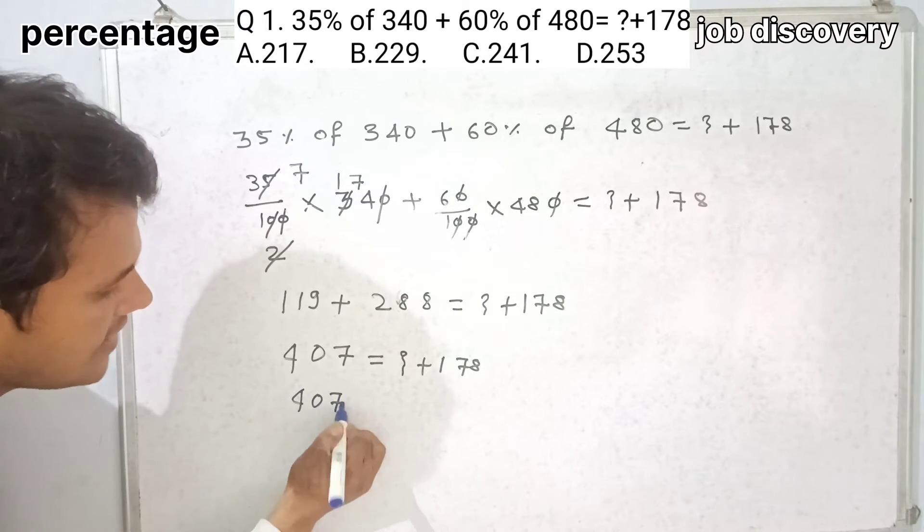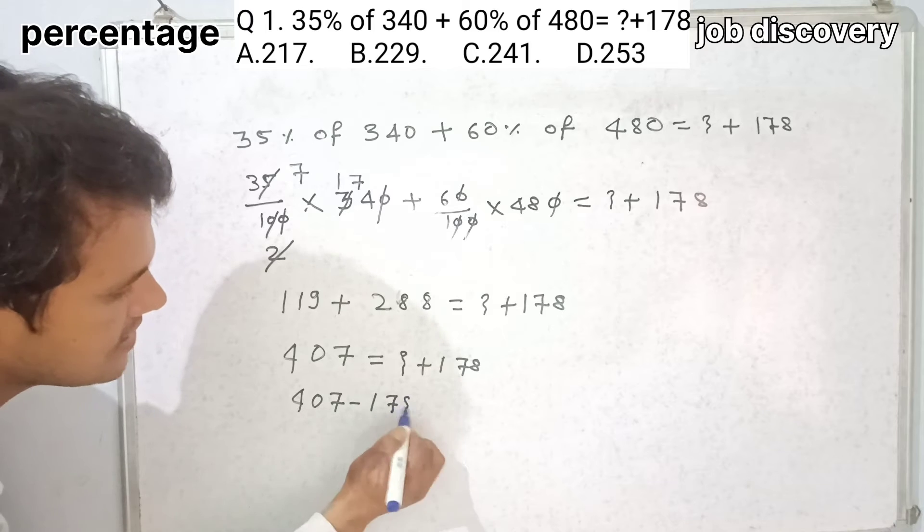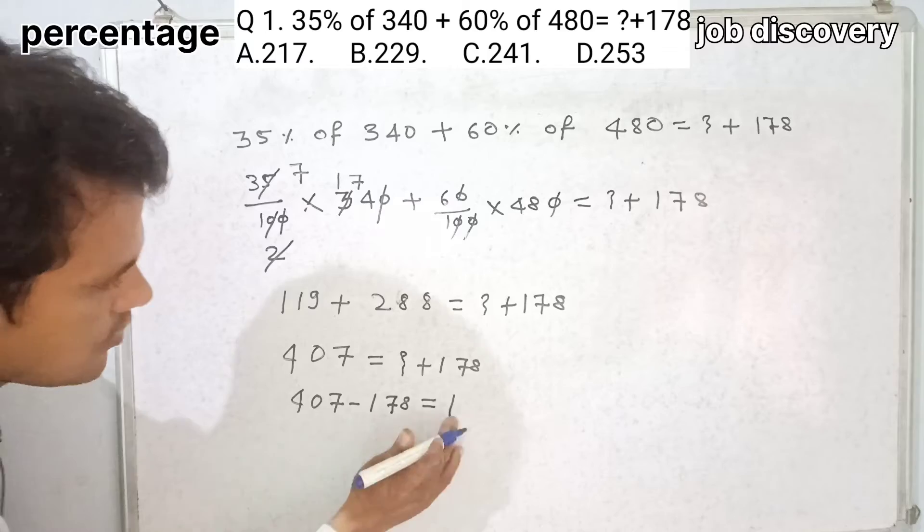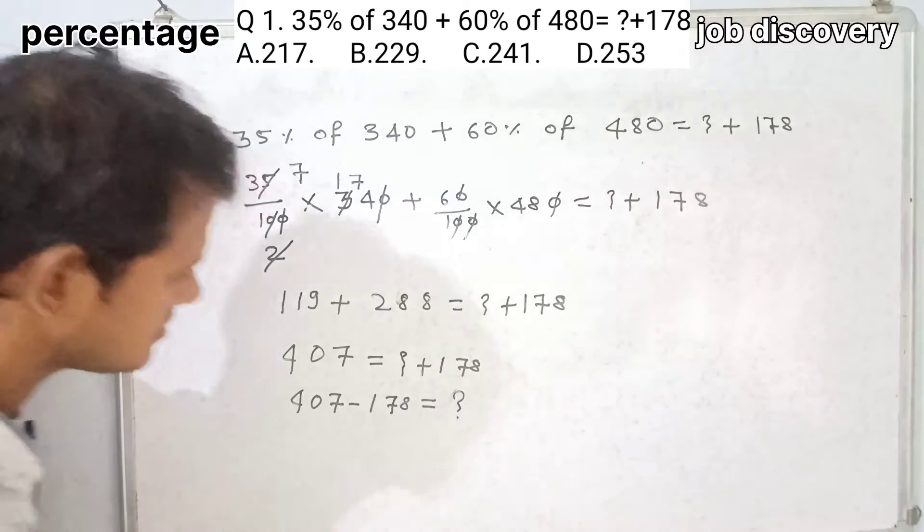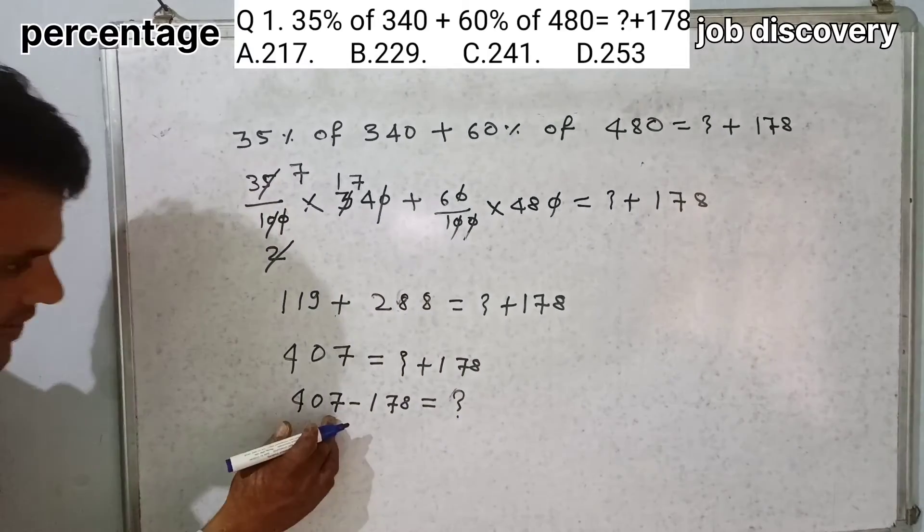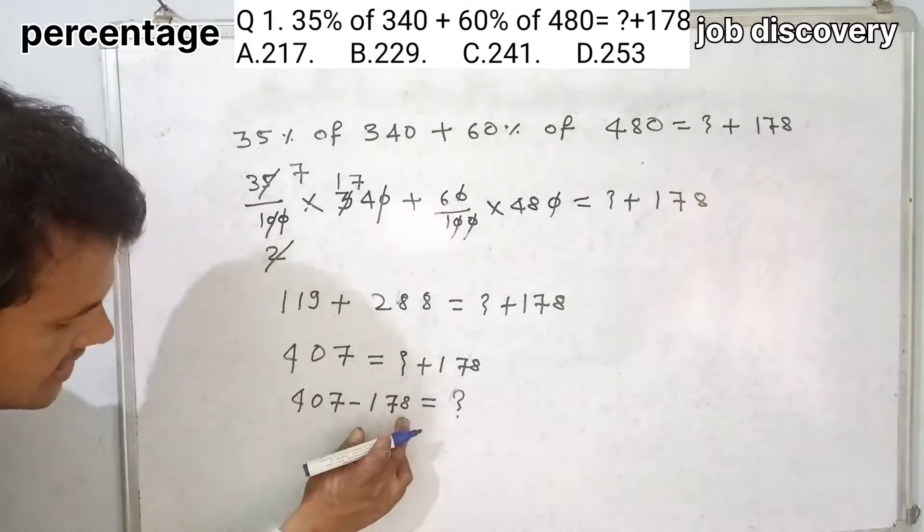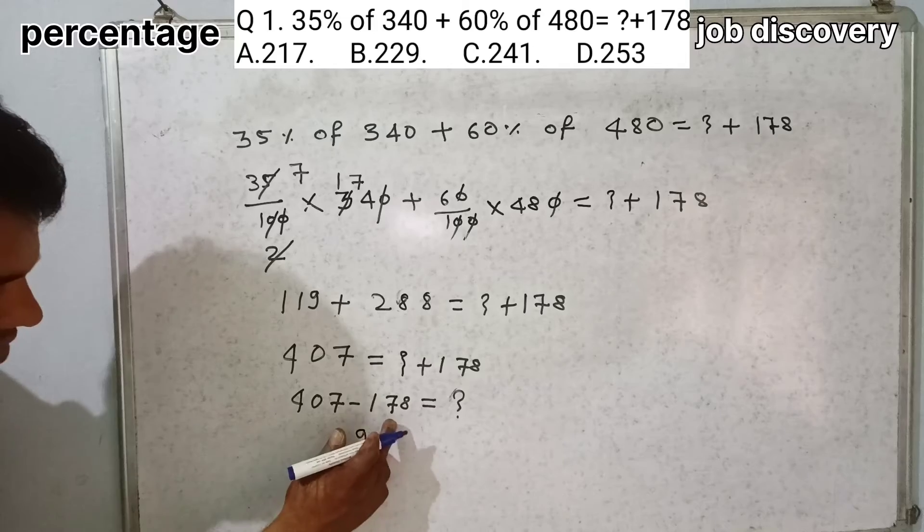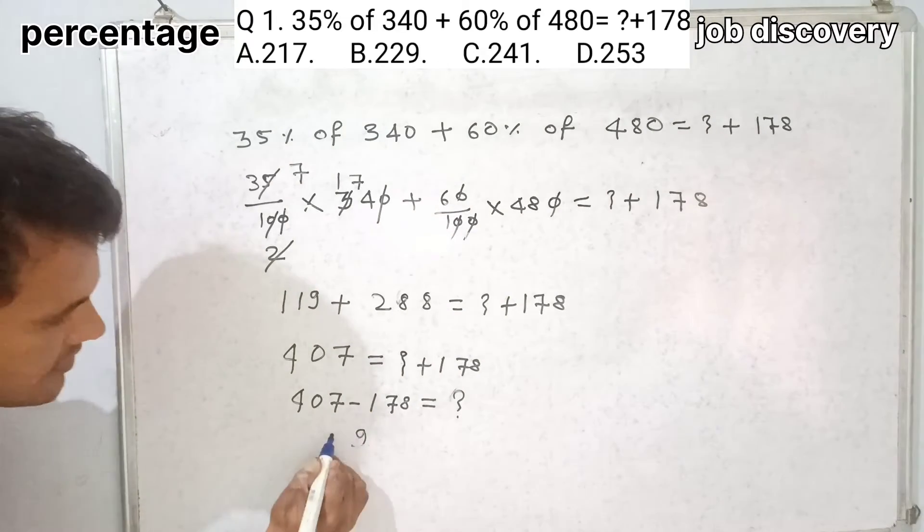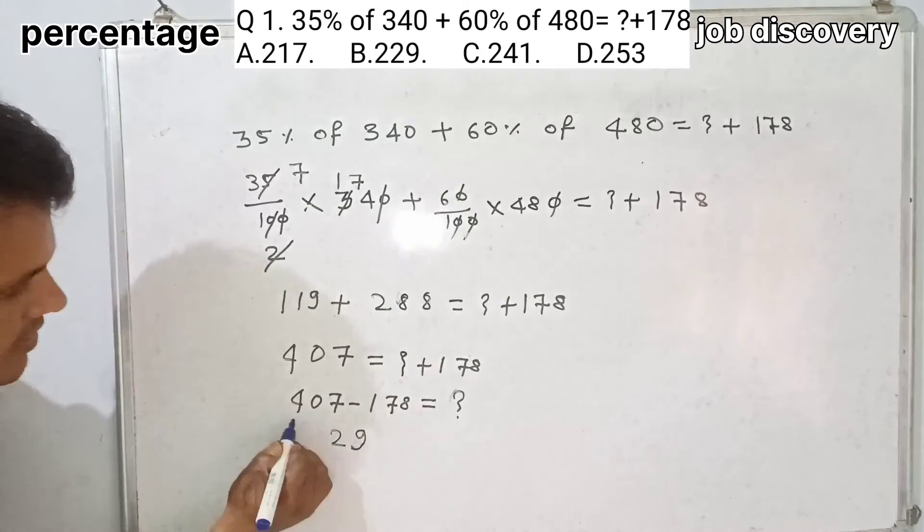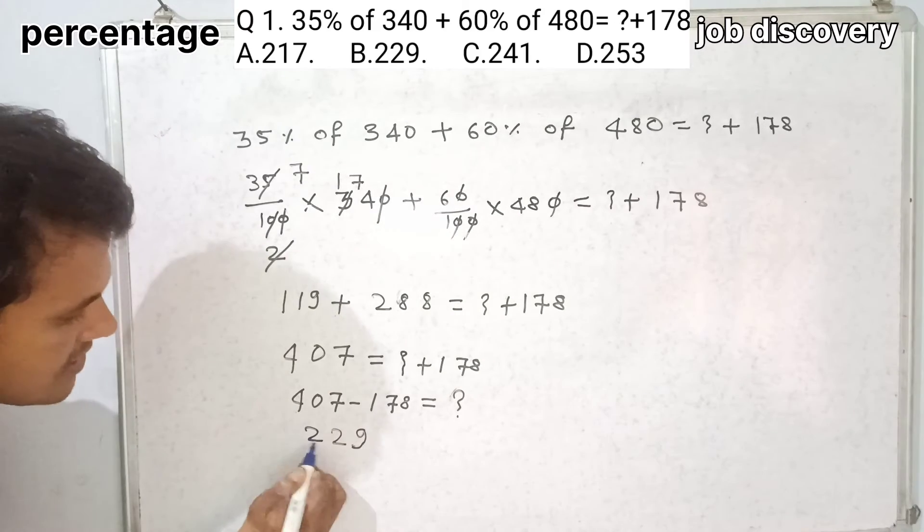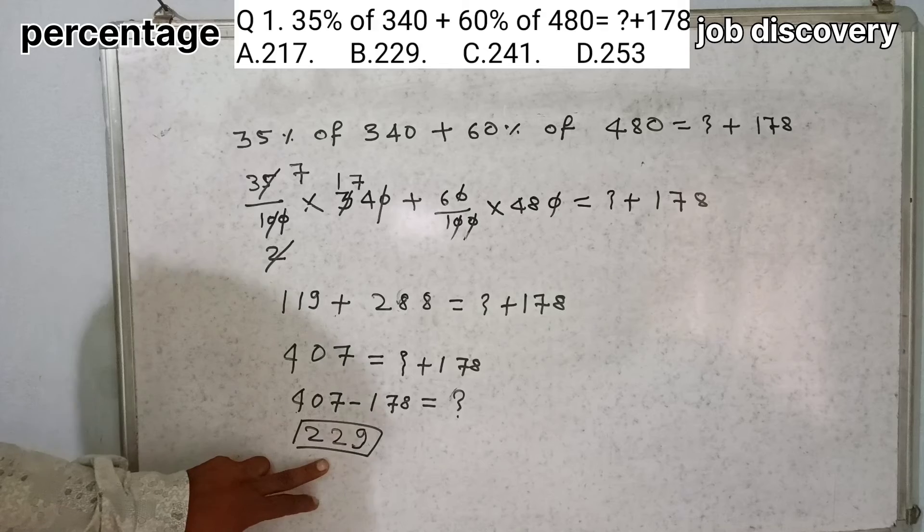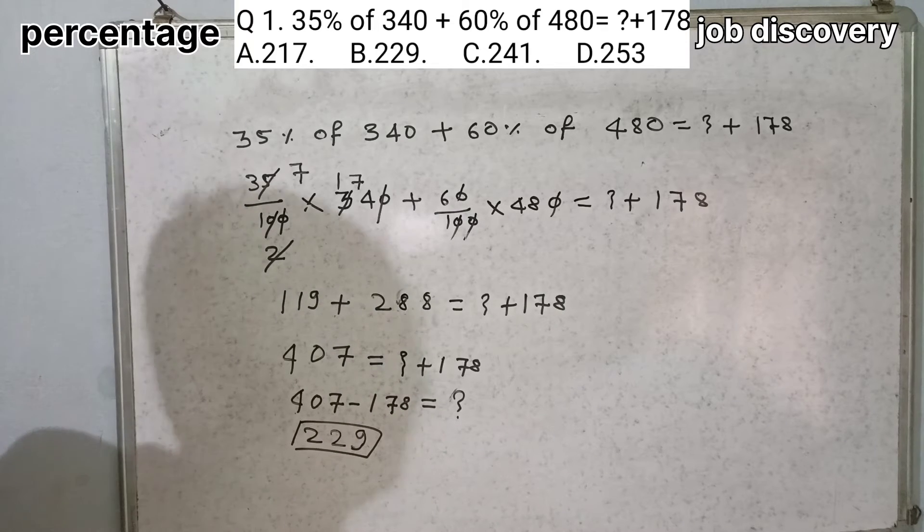Now this is plus so this will be here minus. 178 is equal to question mark. Now see here 17 minus 8 will be 9, 9 minus 7 will be 2. Our answer is 229, which means option B is the correct answer. Let's move to the next question.